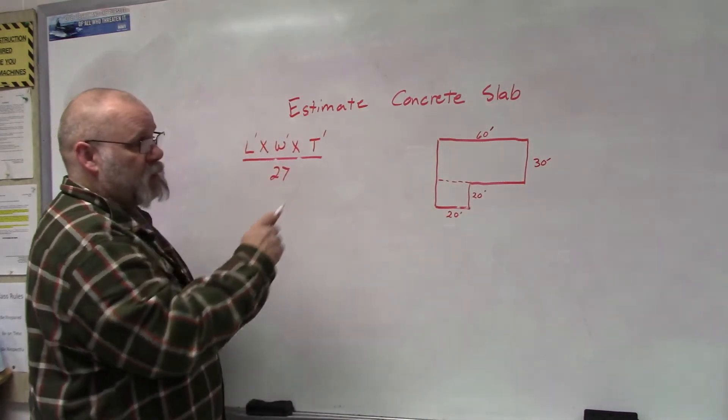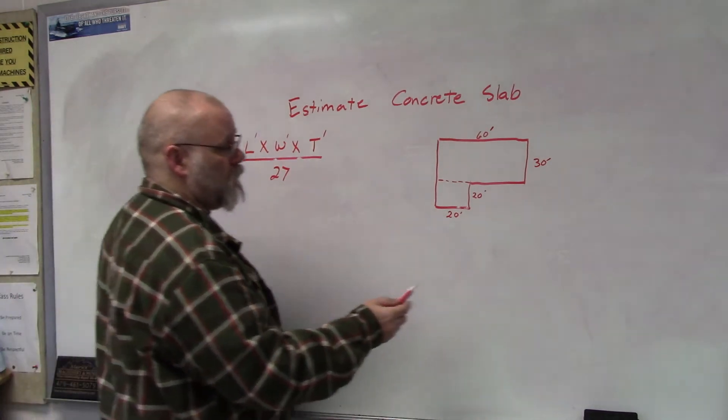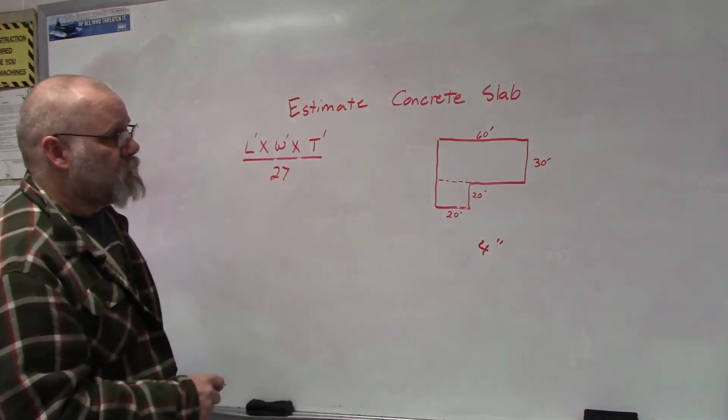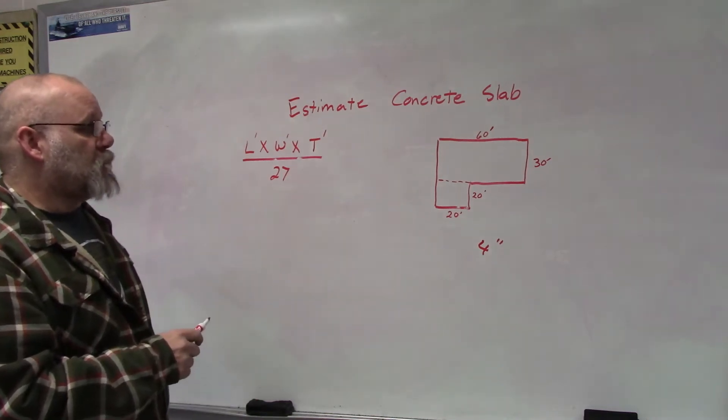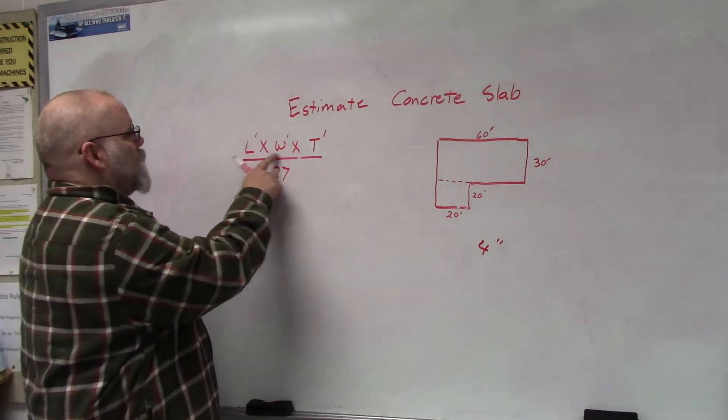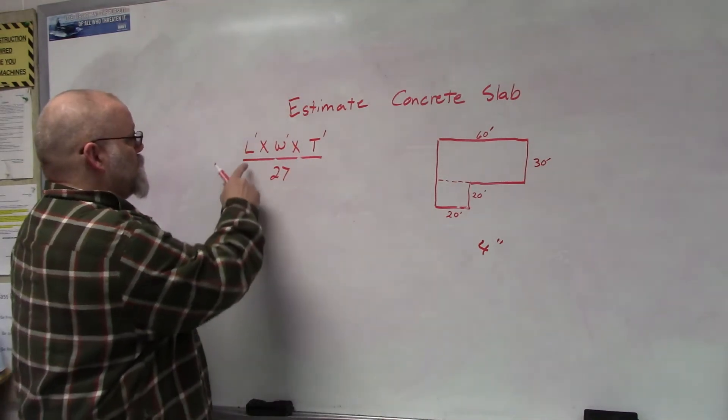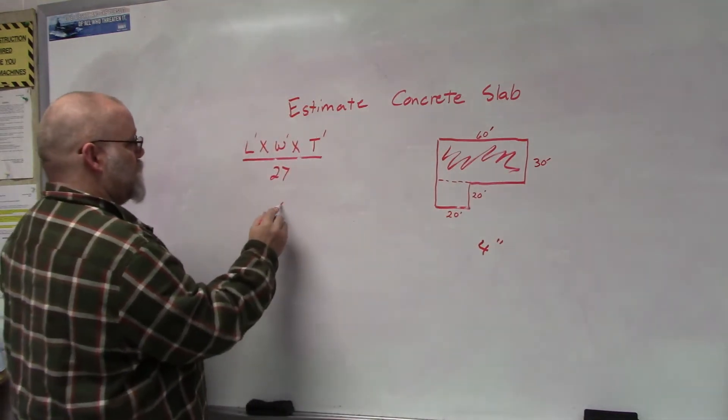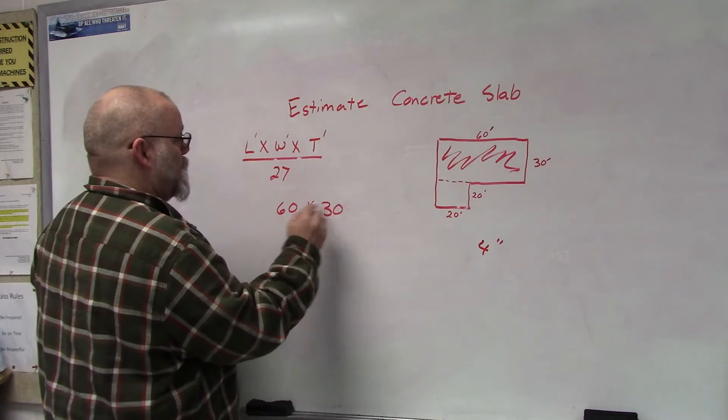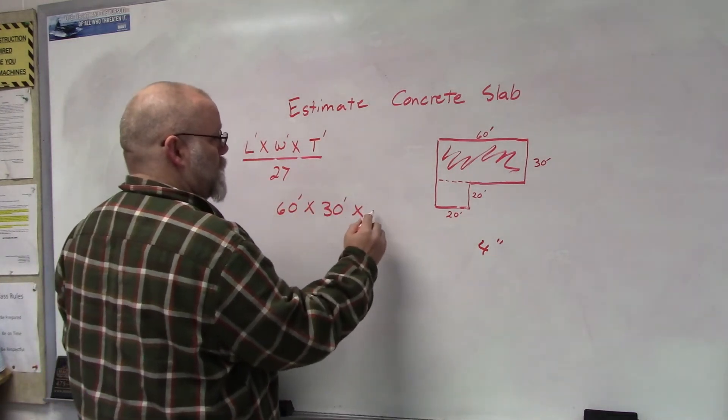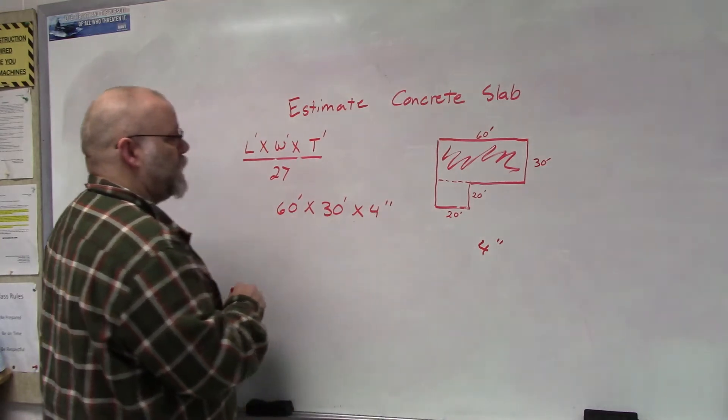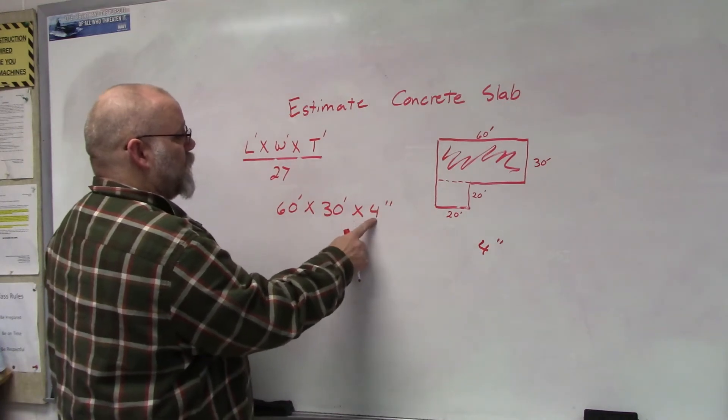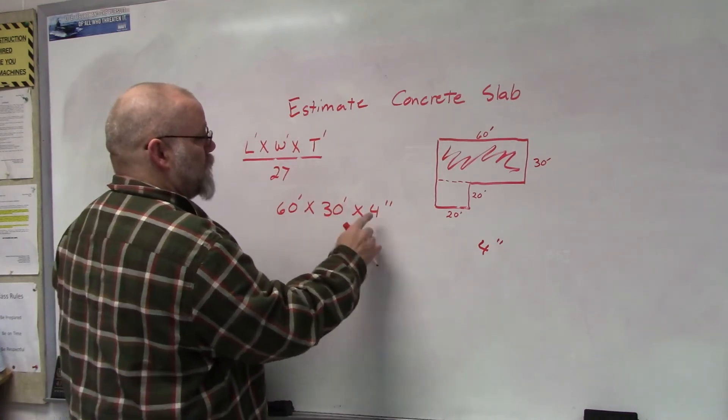We're placing a four-inch slab, so I'm going to use this equation with those numbers. I'm going to do this rectangle first. So the length is 60 times the width of 30 times the thickness which is four inches. Now, if you remember your math, you can't multiply feet and inches, so I have to convert this into feet. The way to do that is put it over 12.